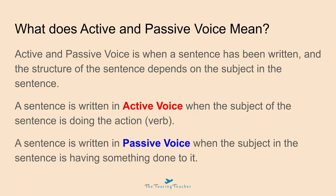First of all, we need to look at what active and passive voice are — what active and passive voice actually means. Active and passive voice is when a sentence has been written and the structure of the sentence depends on the subject in the sentence. A sentence is written in active voice when the subject of the sentence is doing the action, which is the verb.